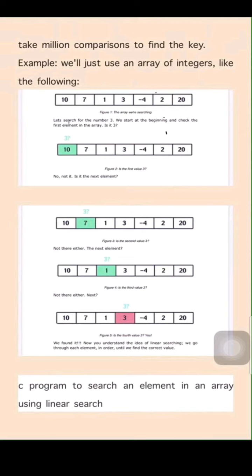In this memory location, we have stored the array of elements: 10, 7, 1, 3, -4, 2, 20 — nearly 7 numbers stored in a memory location. The size of the array is 7. You can count: 1, 2, 3, 4, 5, 6, 7. The size of the array is 7. Now we would like to search one number in this array list.